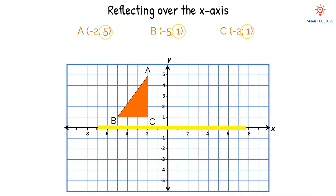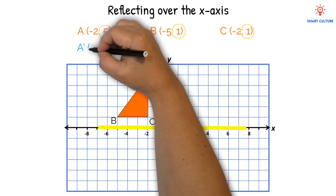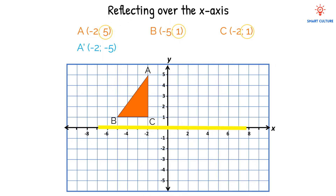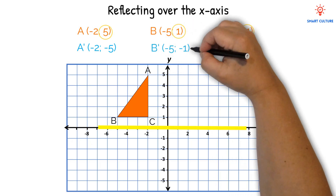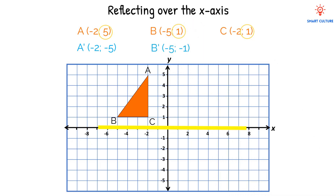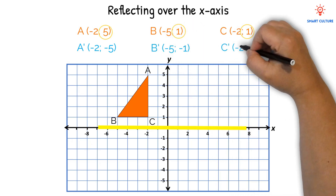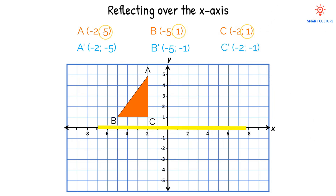Let's write the coordinates for the reflected triangle. We need to keep the x-coordinate the same but change the sign of the y-coordinate. Therefore, A will become A': negative 2 and negative 5. We took the y-value of positive 5 and changed it to its opposite, which is negative 5. Then B will become B': negative 5 and negative 1. C will become C': negative 2 and negative 1.